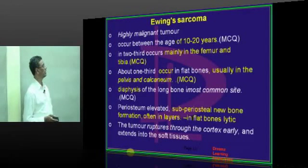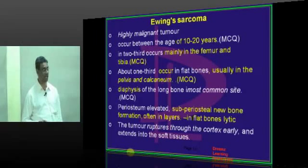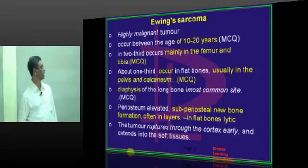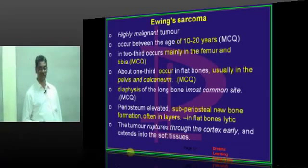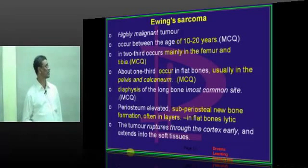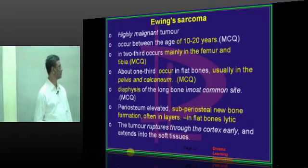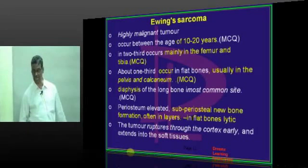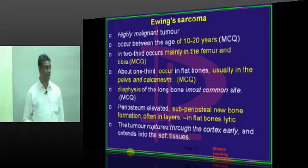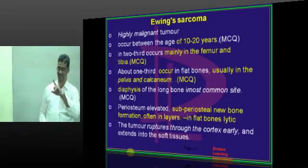Ewing sarcoma is a highly malignant tumor, age 10 to 20, mainly in femur, long bone, and tibia. One third occur in flat bones, usually in the pelvis and calcaneum. Diaphysis of the long bone is most common. The periosteum is elevated, subperiosteum elevated, with new bone formation often in layers — that is the onion peel appearance. But in flat bones it will be lytic.